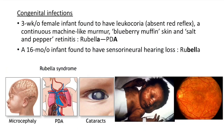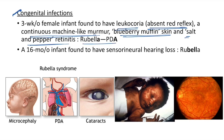Congenital infections. Case 1: 3-week-old found to have leukocoria (absent red reflex), continuous machine-like murmur, blueberry muffin skin, and salt-and-pepper retinitis — congenital rubella infection. Case 2: 16-month-old found to have sensorineural hearing loss — also rubella. Mnemonics: PDA ends with A, rubella ends with A; rubella causes deafness (the child won't be able to hear).